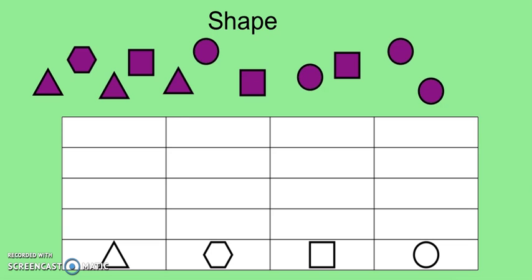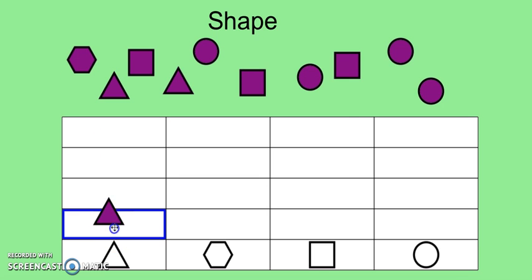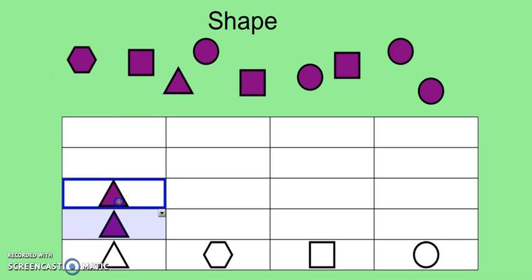Now let's group our objects by shape. All of these shapes are purple, but we're going to group them by their individual shape: triangle, hexagon, square, and circle. First, let's group the triangles. So I'm going to drag all of my triangles into this column.